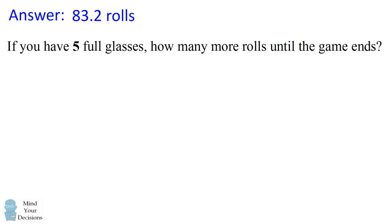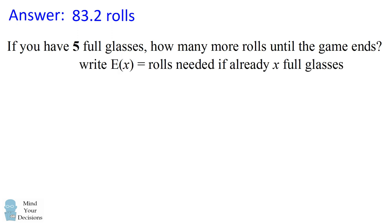We're going to start by imagining from nearly the end of the game. Imagine you have 5 full glasses — how many rolls on average is it going to take for the game to end? We're going to write e(x) for the rolls needed if we already have x full glasses. So if we have 5 full glasses, e(5) is given by a certain equation.